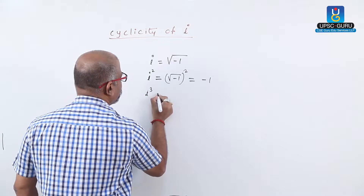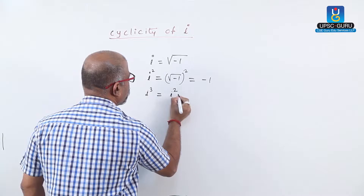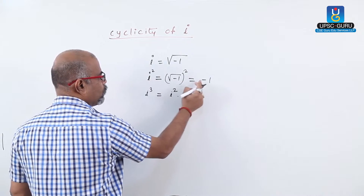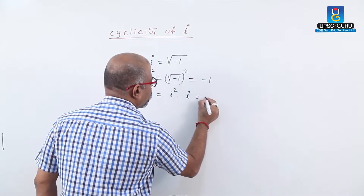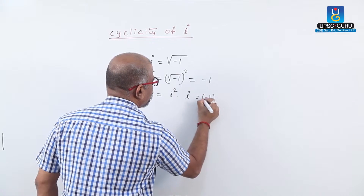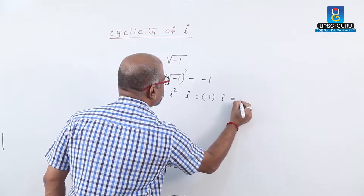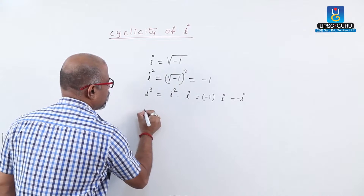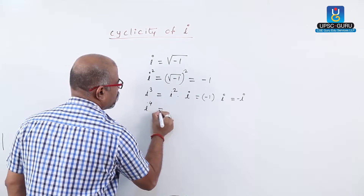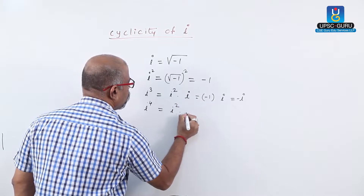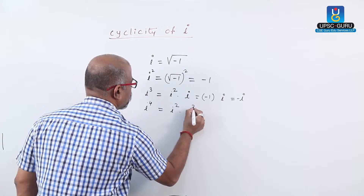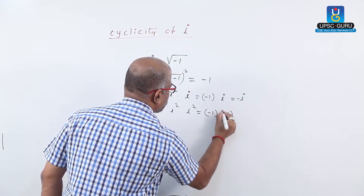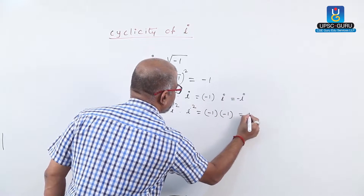i cube is nothing but i square into i. We have i square equals to minus 1, therefore minus 1 into i gives us minus i. Then i raise to 4, that is i square into i square: minus 1 into minus 1 gives us plus 1.